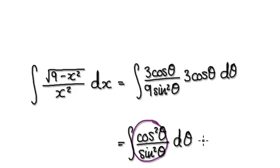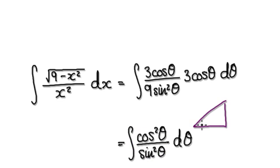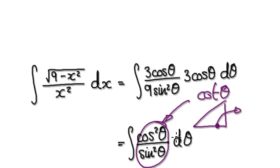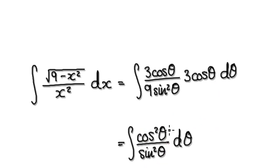This, by the way, is cotangent — cot θ. Another way of visualizing it is cot of theta. Just bear that in mind. So we now need to integrate this.